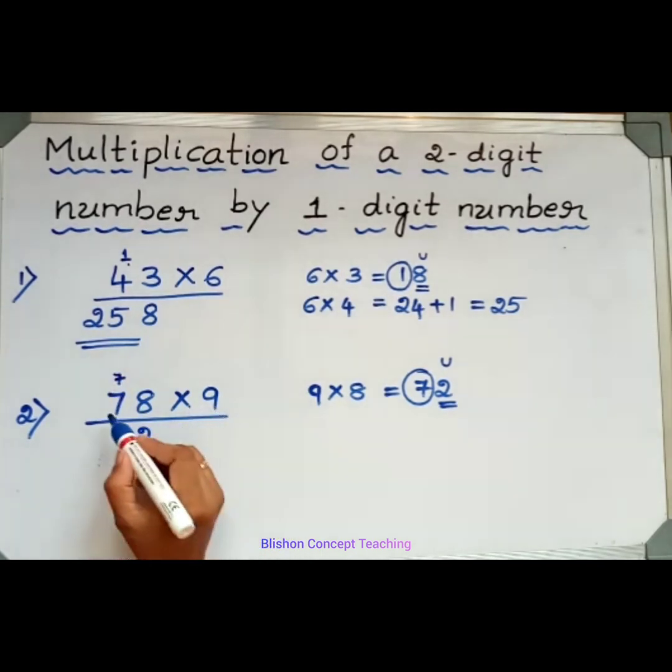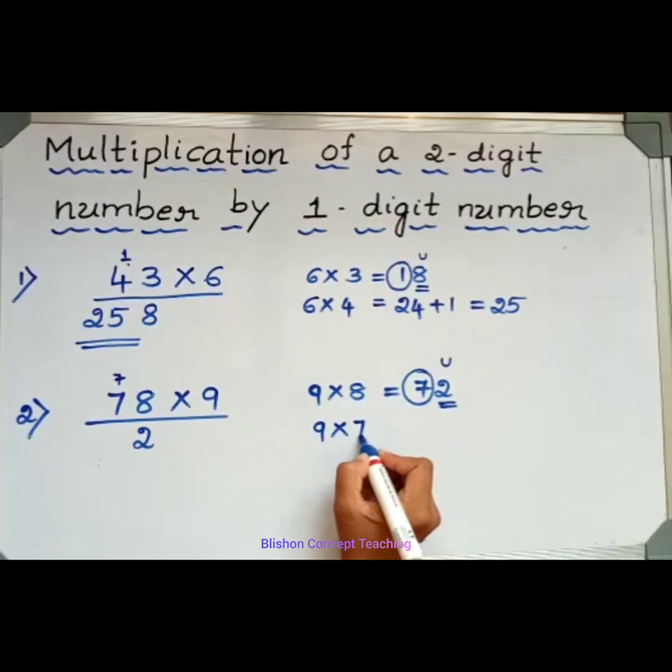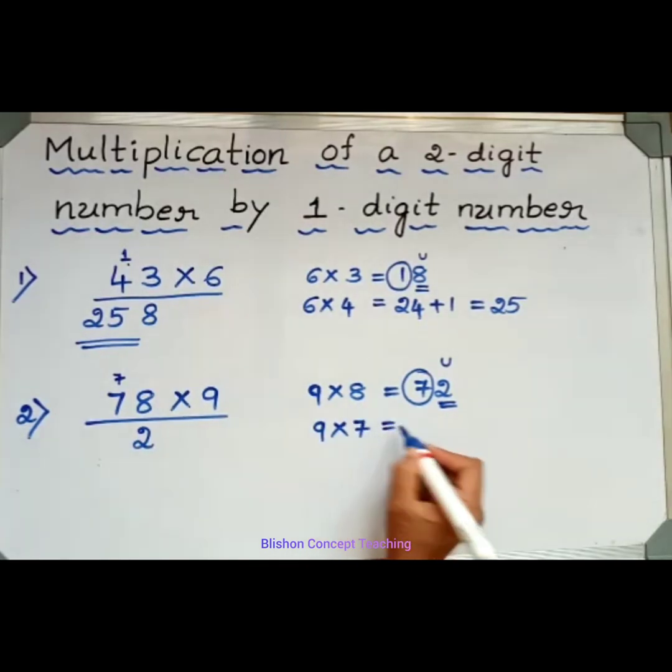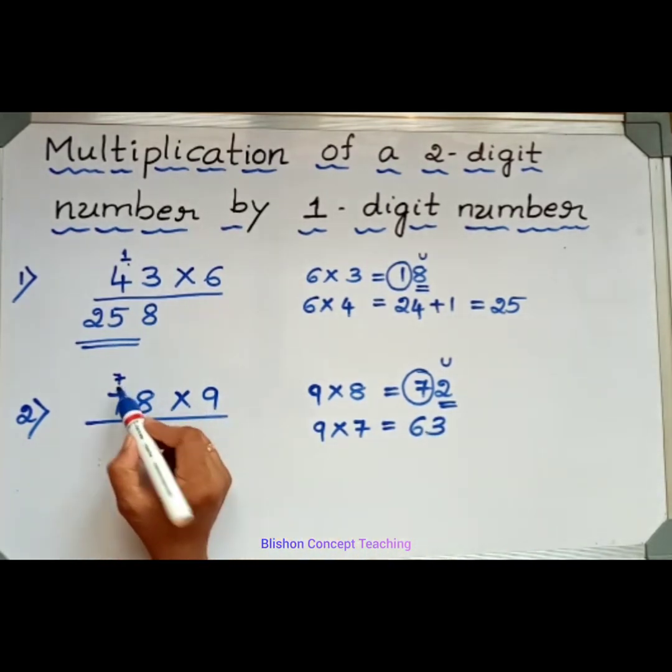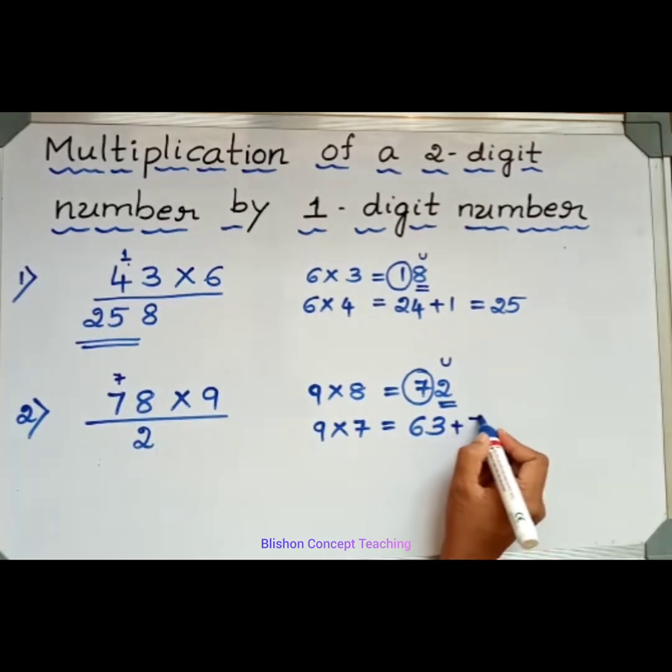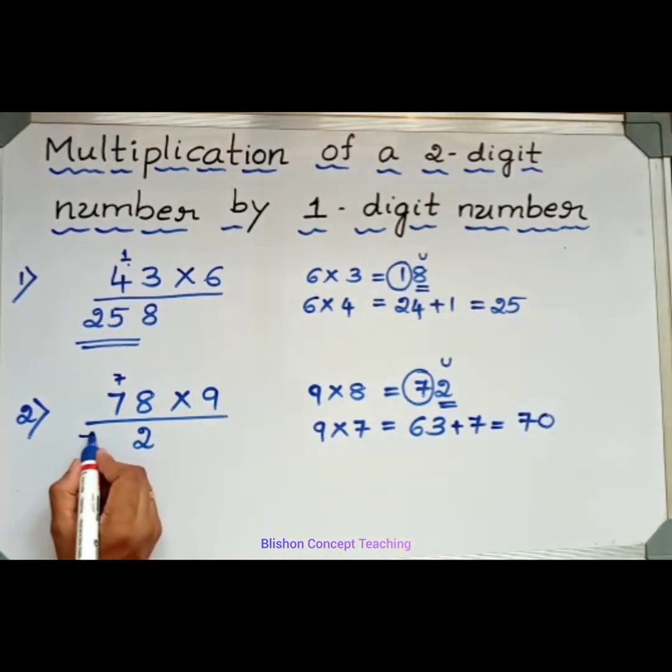Now, 9 times 7 is 63. For this 63, I will add this carryover 7. That is 70. Answer is 702.